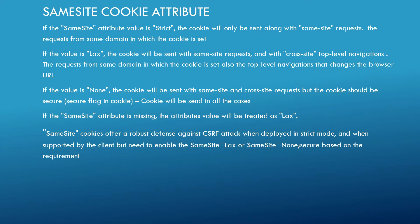The third value is none. The cookie will be sent with same-site and cross-site requests, but the cookie must be secure — the secure flag should be enabled. If you go with none, the cookie will be sent in all cases. This is the current default behavior — cookies are sent for all cases, whether third-party, first-party, or same domain — but the difference is the secure attribute must be set and accessed through HTTPS.